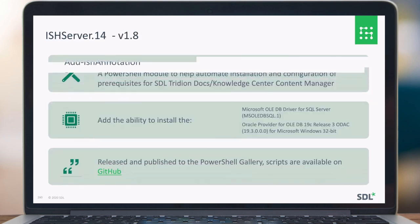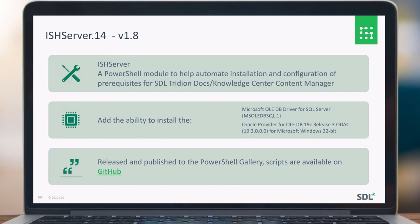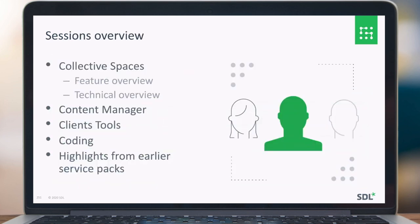We also have IstServer, with version 1.8 released. IstServer is a PowerShell module to help you automate installation and configuration of prerequisites for 3D and 3D Docs. What we added in this version is the ability to install the Oracle provider, as well as the Microsoft OLE DB provider. It is released and published on the PowerShell gallery, and the scripts are also available on GitHub. This brings us to the end of this session — please watch the recordings of the other sessions as well. Thank you.